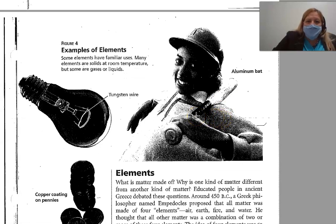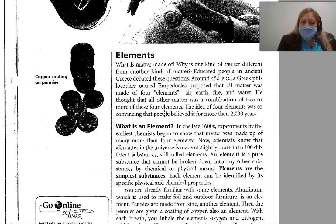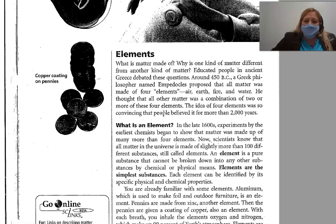Examples of elements. Some elements have familiar uses. Many elements are solid at room temperature, but some are gases or liquids. Educated people in ancient Greece debated what matter is made of. Around 450 BC, a Greek philosopher named Empedocles proposed that all matter was made of four elements: air, earth, fire, and water. He thought that all other matter was a combination of two or more of these four elements. The idea of four elements was so convincing that people believed it for more than 2,000 years.